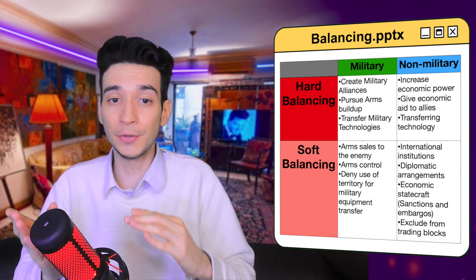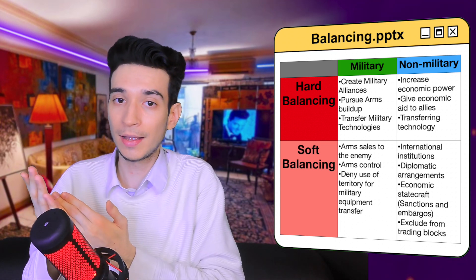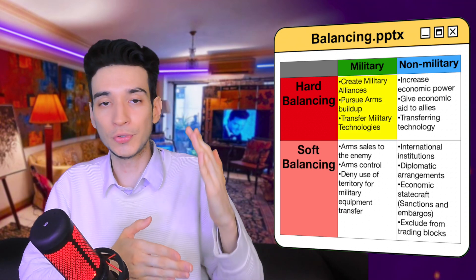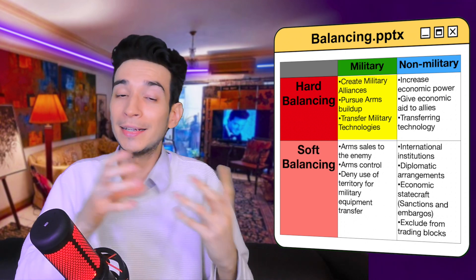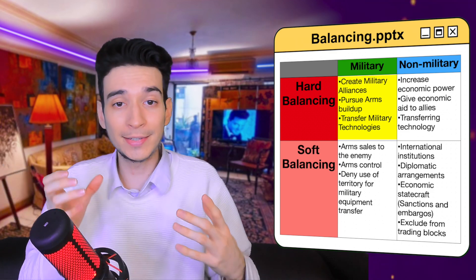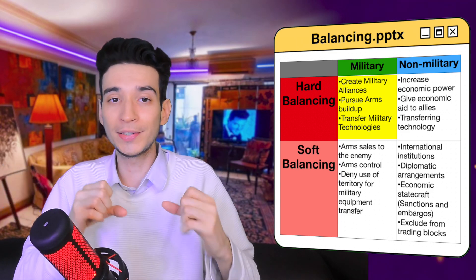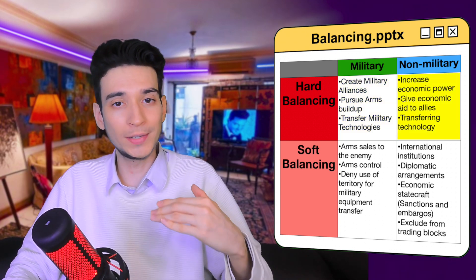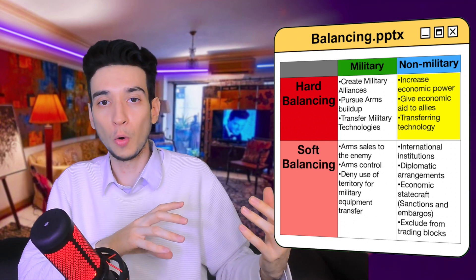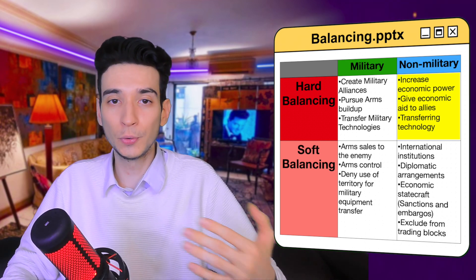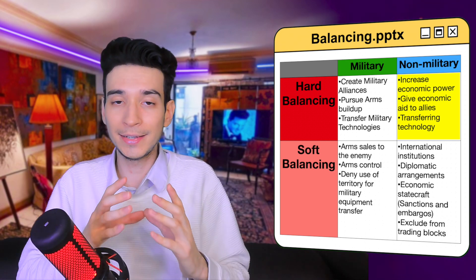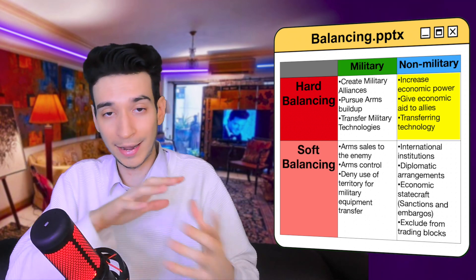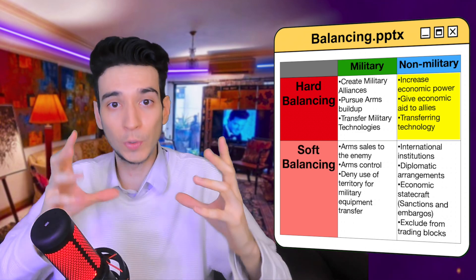These actions can be either military or non-military. Militarily, hard balancing can include creating military alliances, pursuing arms buildup, and transferring military technologies to allied countries — anything that militarily increases a country or alliance's power. Non-militarily, it can involve increasing a country's own economic power, giving economic aid, or transferring technology to allied countries — any non-military method that helps a country or alliance balance against another.